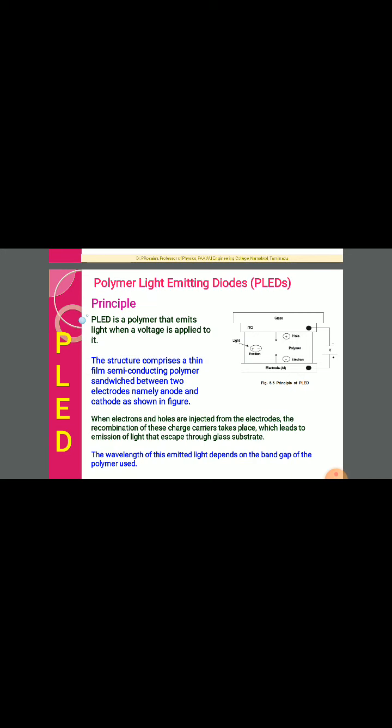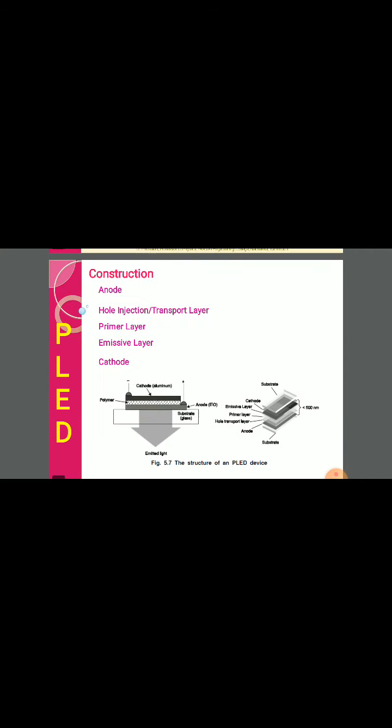Which type of polymer we use determines the light emitted — the emitted light wavelength depends upon each type of polymer used between the electrodes. Looking at the diagram layer by layer: initially the substrate, then the anode, the hole transport layer, the emissive layer, and the cathode. These are the different layers. From an exam point of view, draw the diagram and note down and explain the parts for construction.